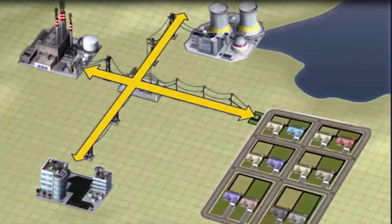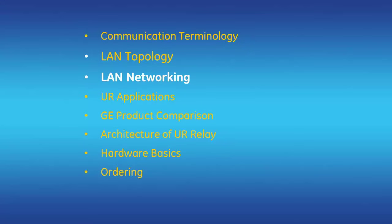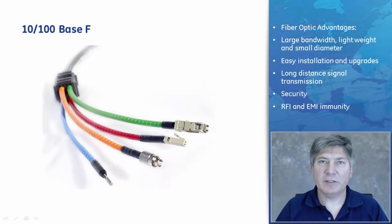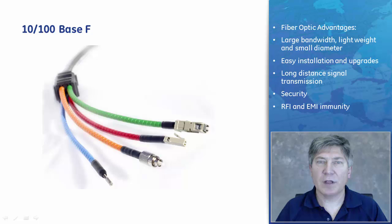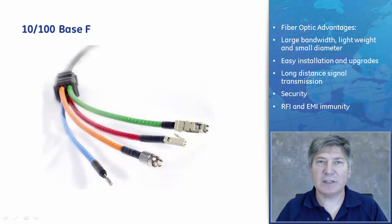In power system applications where communications over larger distances are required, fiber-optic Ethernet is preferred. Fiber has an advantage over 10/100 Base-T in that it is immune to EMI (electromagnetic interference) and RFI (radio frequency interference). A basic fiber-optic system consists of a transmitting device to generate the light signal, an optical fiber cable to carry the light, and a receiver to accept the light signal. Fiber-optic systems offer advantages including large bandwidth, light weight and small diameter, easy installation and upgrades, long-distance signal transmission, security, and non-conductivity.